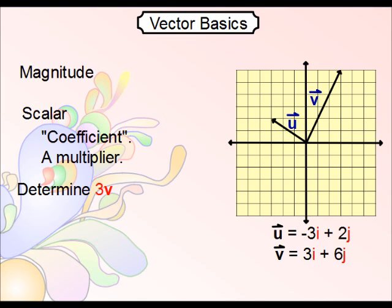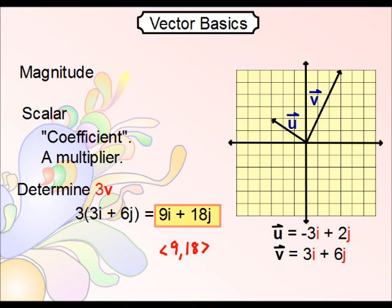So right here are your components of vector v. If you triple them, that's this. And then if you take that 3 and just simply distribute to both values there, you get 9i plus 18j. Or as stated before, you can write it as 9, 18, surrounded by carats, or arrows there.